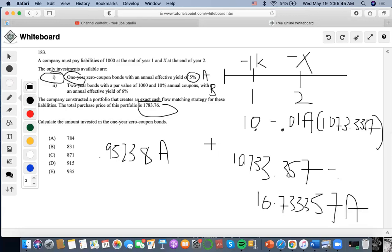Then I'm gonna combine this and this and this. I'll do 0.95238 minus 10.733357, I get negative 9.780977A plus this amount.